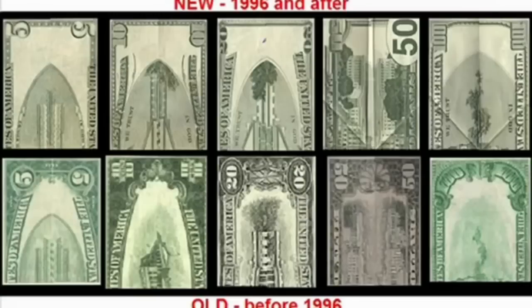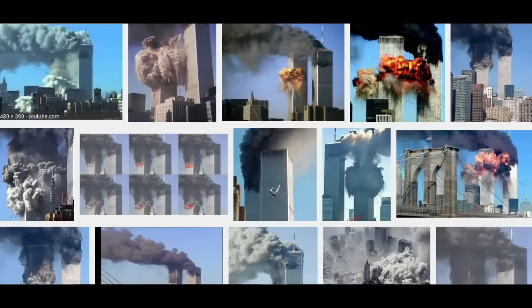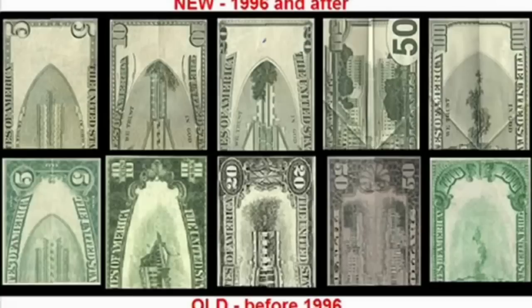Can you explain why United States money has these images on it? When you take US currency and fold it in the exact same way on each different denomination, you get a set of imagery. Now some of you have seen this information. For anyone with logical common sense, they can see this imagery is about the twin towers falling — all different stages of the twin towers that fell on 9-11. To understand how it ended up there, you simply have to look at who printed the dollar bill.